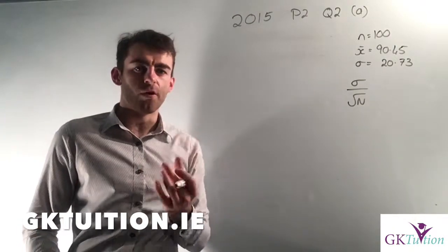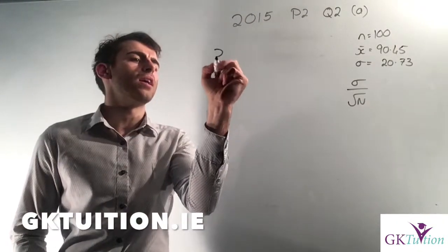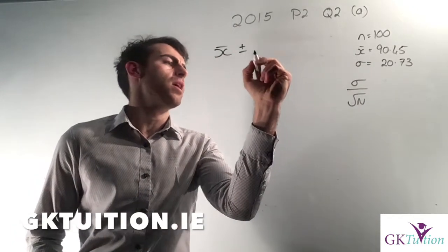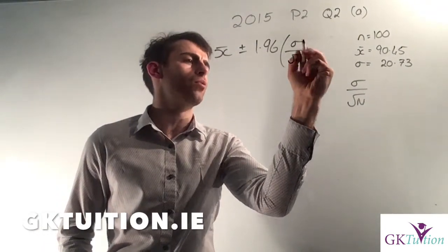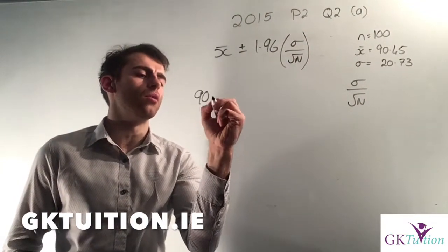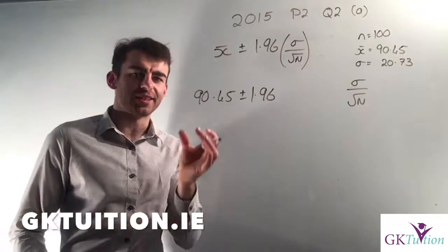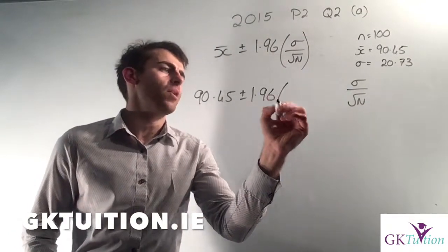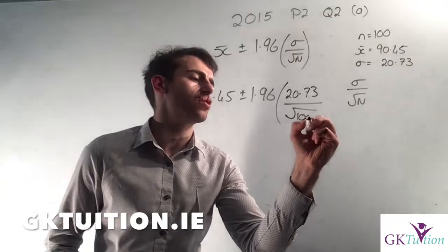Once you've recognised that, we have a formula for our confidence interval. A 95% confidence interval using the standard error of the mean is X-bar — the result of my sample — plus or minus 1.96 times the standard error of the mean, which is sigma over the square root of N. So the result of my sample was €90.45, plus or minus 1.96. The 1.96 allows me to be 95% confident about my results. My sigma in this case was 20.73, and the square root of N is the square root of 100.